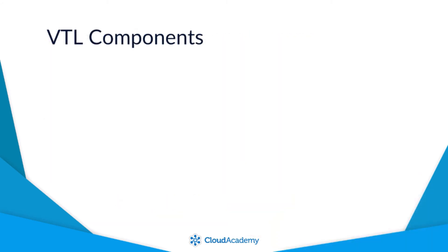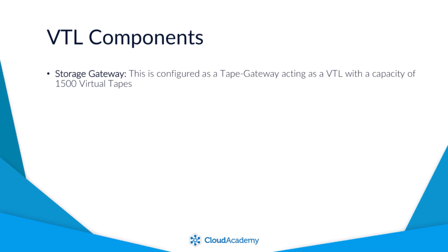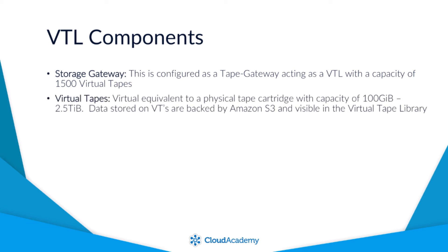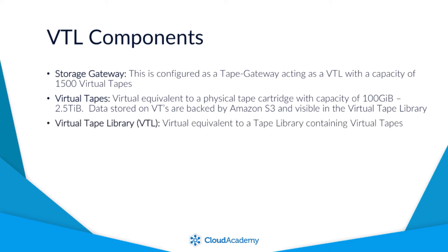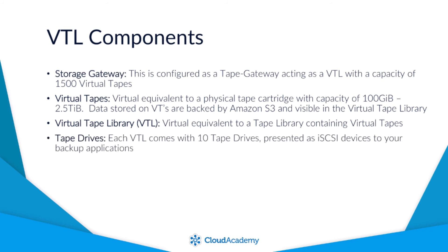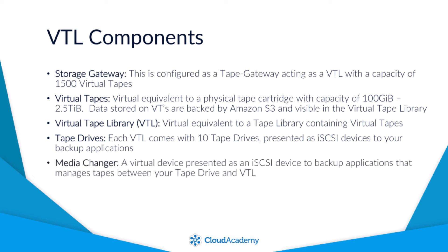The tape gateway solution is comprised of several elements. The storage gateway itself is configured as a tape gateway with a capacity to hold 1500 virtual tapes. Virtual tapes are the virtual equivalent to a physical backup tape cartridge, ranging from 100GB to 2.5TB in size, with data backed by AWS S3. The virtual tape library contains your virtual tapes. Every VTL comes with 10 virtual tape drives, which are presented to your backup applications as iSCSI devices. A media changer is a virtual device that manages tapes to and from the tape drive to your VTL, also presented as an iSCSI device to your backup applications.